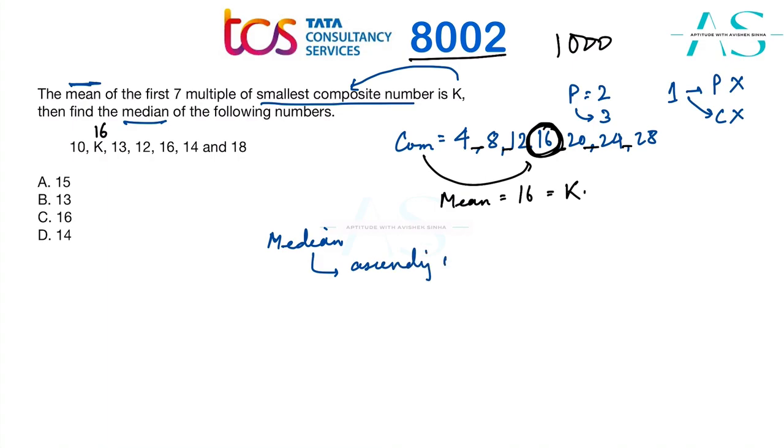Let's say we arrange this data in ascending order. If we do that, we get the data as 10, 12, 13, 14, 16, one more 16, and then 18. Are we done with all numbers? Let's see: one, two, three, four, five, six, seven.